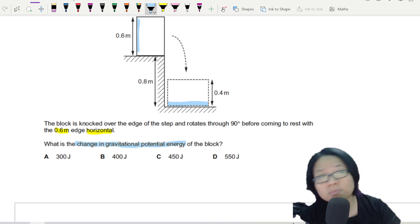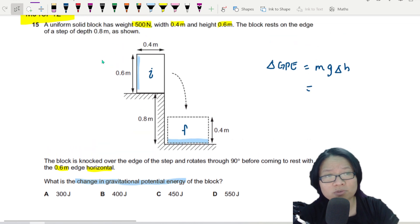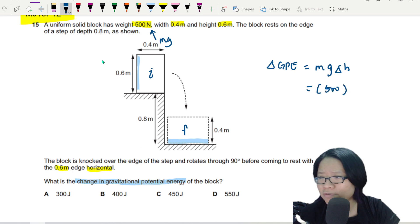Now you may be tempted to say, well, the initial position is here, final position is here. I know change in GPE will be mg times change in height. They tell me the weight of the block mg is 500 Newton, so can I just substitute this as 500 and the change in height is this one?